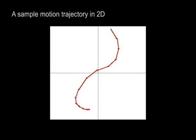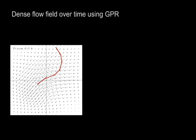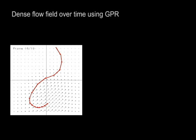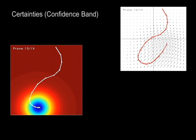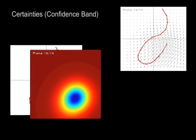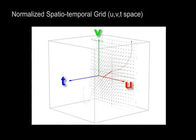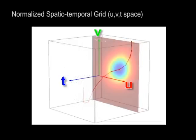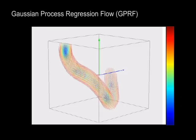We will introduce Gaussian process regression flow. Here is a sample motion trajectory shown in two dimensions. We use Gaussian process regression to generate a mean flow field based on every time step in the input trajectory. We associate a confidence value with each point in the flow — high confidences are shown in blue and low confidences in red. We can visualize the trajectory in the spatiotemporal domain by normalizing it in the time dimension. The mean flow field and confidences are also mapped to this domain. This is the Gaussian process regression flow, or GPRF.